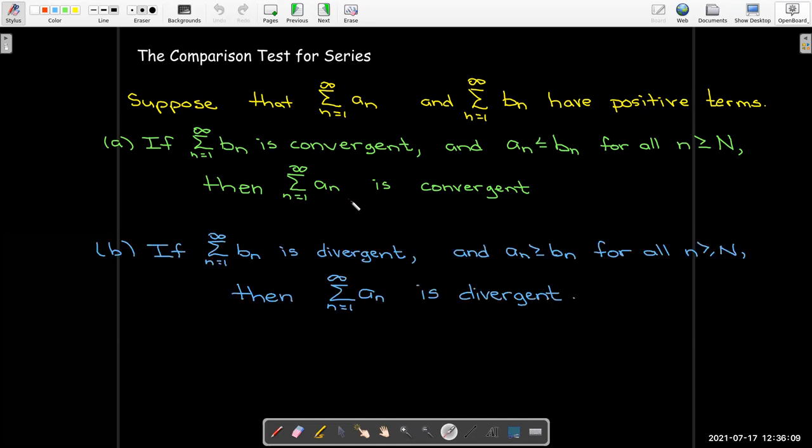So now, on the other hand, if B sub n is divergent and A sub n is actually larger than B sub n, then A sub n has to be divergent as well.